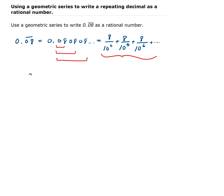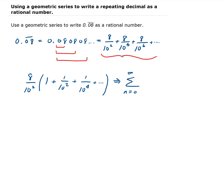So what we're going to do is write this as a summation. Before we do that, we can factor out 8 over 10 squared from each term, so that's going to give us 1 plus 1 over 10 squared plus 1 over 10 to the fourth, and so on. Now we can write this as a sum going from 0 to infinity of 8 over 10 squared times 1 over 10 squared to the power n.